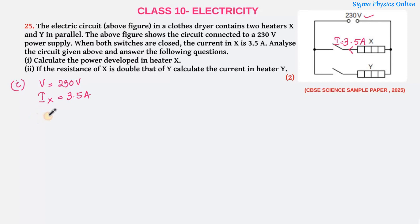We have the voltage is 230V and the current flowing through heater X is 3.5A. Now the formula for power, because we have V and I, is power equals V into I. Substituting the values, we get 230 multiplied by 3.5 which is 805W, because the SI unit of power is Watt. So the power developed in heater X is 805W.